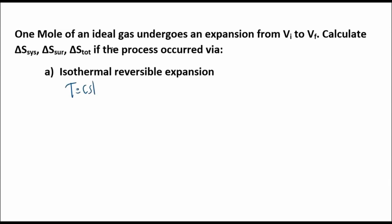Let's see. So T is constant because it's isothermal, and a reversible expansion means that work equals negative pdV, and this is pressure of the system if it's reversible. If it's irreversible, it's pressure of the surroundings, the external pressure here.